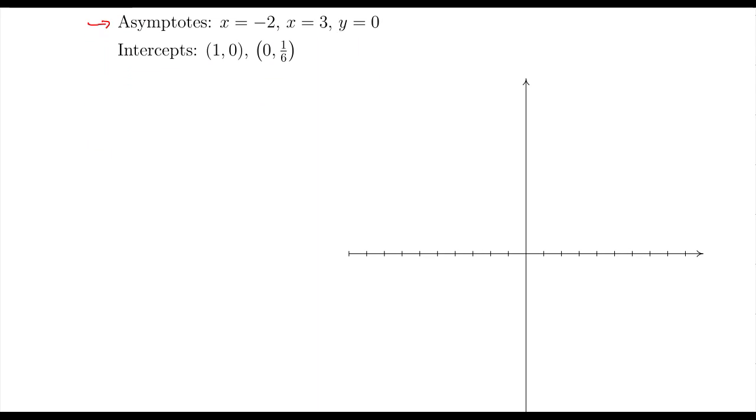Negative two is going to be about right here. Three, not negative two zero, but just negative two. Try that again. Three is going to be about right there. And then y equals zero is going to be the x-axis as promised.